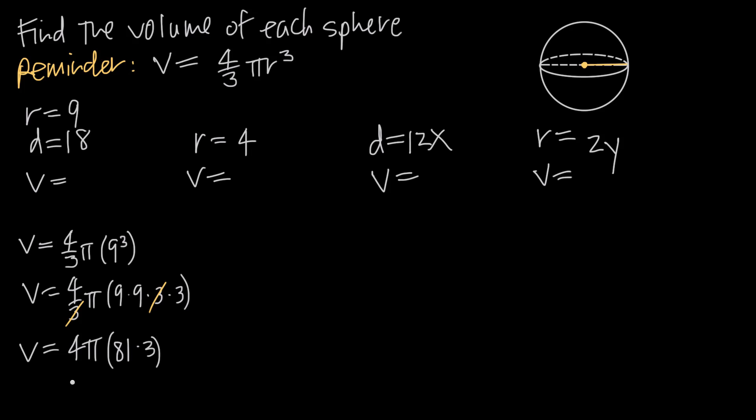and 12 times 81 is 972, so we get volume is equal to 972 pi. And we can go ahead and say that the volume of the sphere with diameter 18 has to be 972 pi.